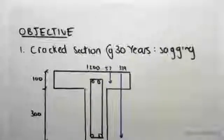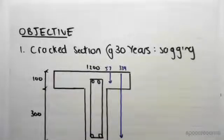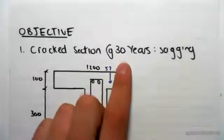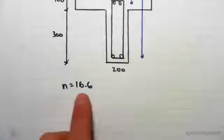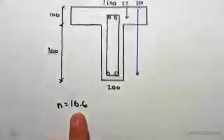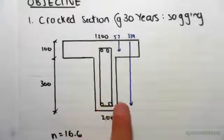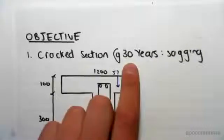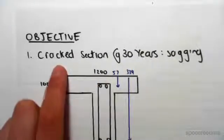Hey guys, the objective of this video is to look at the cracked section at 30 years sagging once again. The only difference between this type of problem at 30 years versus 28 days is going to be the n, which is 16.6, which will give us a different amount of replacement concrete at the top and bottom. But the process for the cracked y and I value is the exact same.